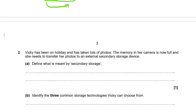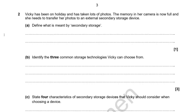Moving on to secondary storage — Vicky has been on holiday taking photos and the memory on her camera is full. She needs to transfer photos to an external secondary storage device. Secondary storage is usually non-volatile, meaning it retains data when power is turned off, whereas memory (RAM) is volatile and loses data when powered off.